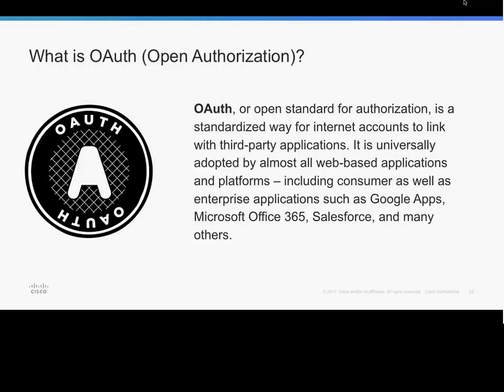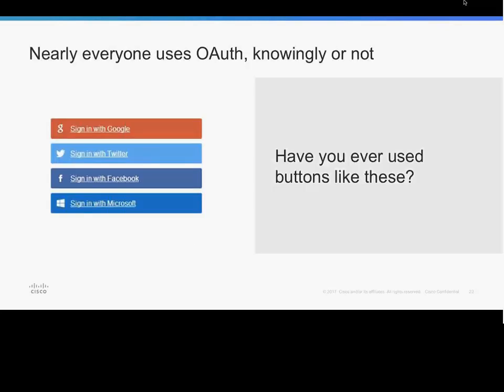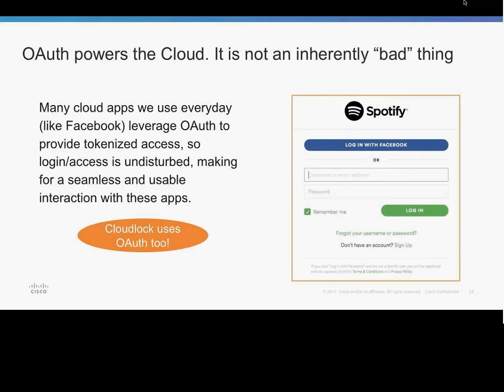OAuth, or open authorization, essentially gives users the ability to link their internet accounts with a third-party application. Anytime you're browsing the internet and see buttons to sign in with Outlook, Office 365, Twitter, Facebook, or LinkedIn - this is leveraging OAuth. For example, Spotify gives you the ability to log in using your Facebook account without ever creating a new account. It's very simple and groundbreaking - every application created online right now is pretty much leveraging OAuth. But you have to be wary of the risks. To date, CloudLock has analyzed and detected more than 400,000 unique OAuth applications.